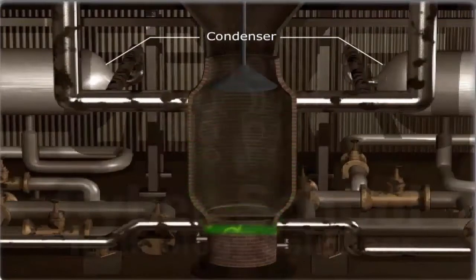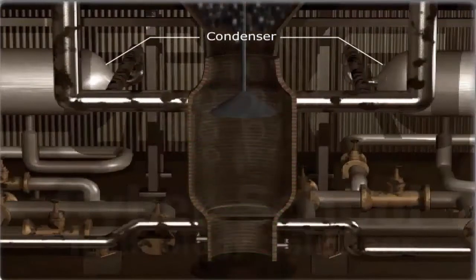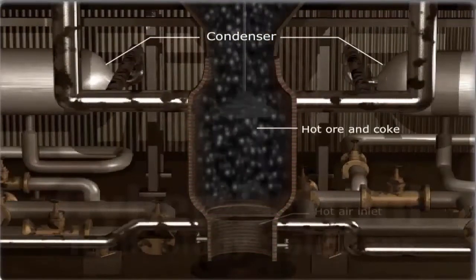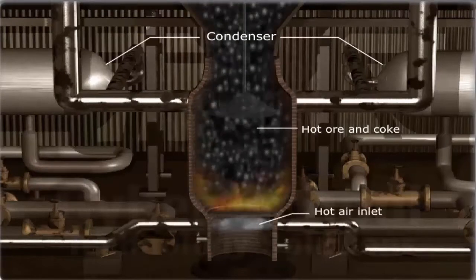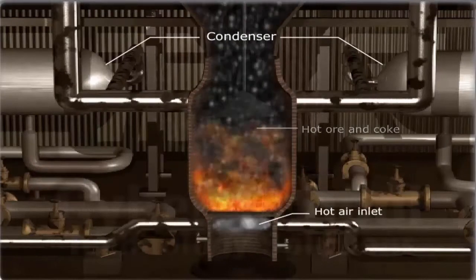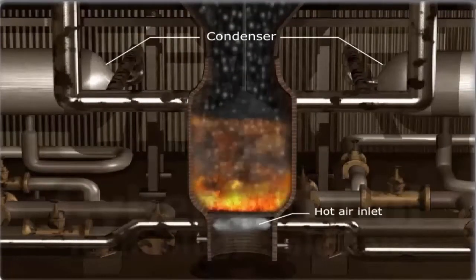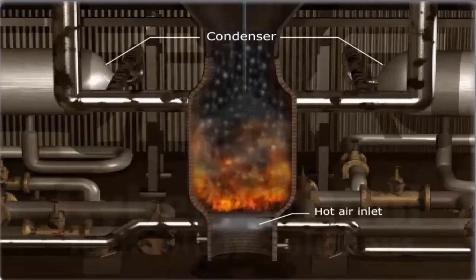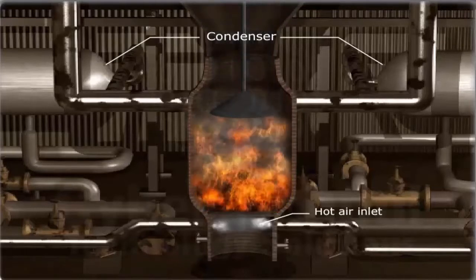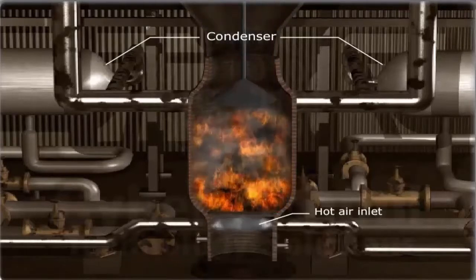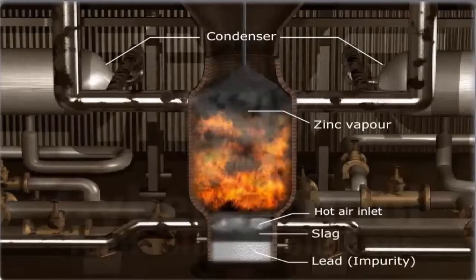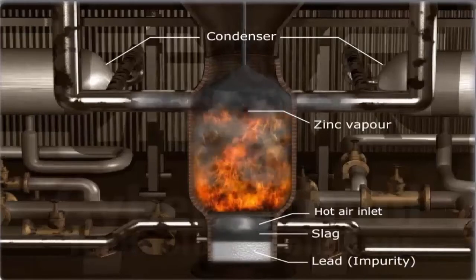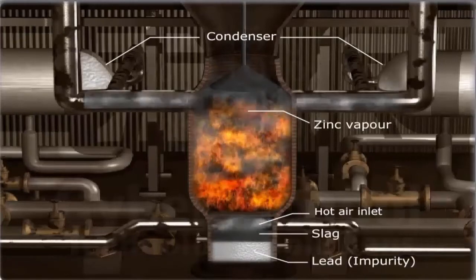Zinc. The principal ore of zinc is zinc blende, ZnS. ZnS is enriched by the froth flotation method, then converted to ZnO by heating strongly in air. ZnO is then reduced to metallic zinc by heating with coke in a furnace.